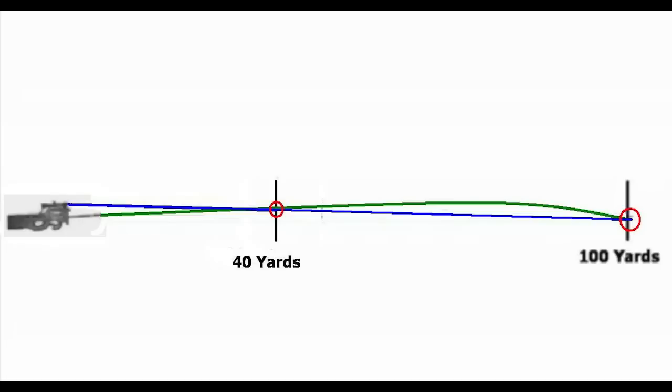But you can see by this simple drawing why exactly a rifle would shoot low at 10 yards or shoot high at 75 yards. It all has to do with the ballistic arc.